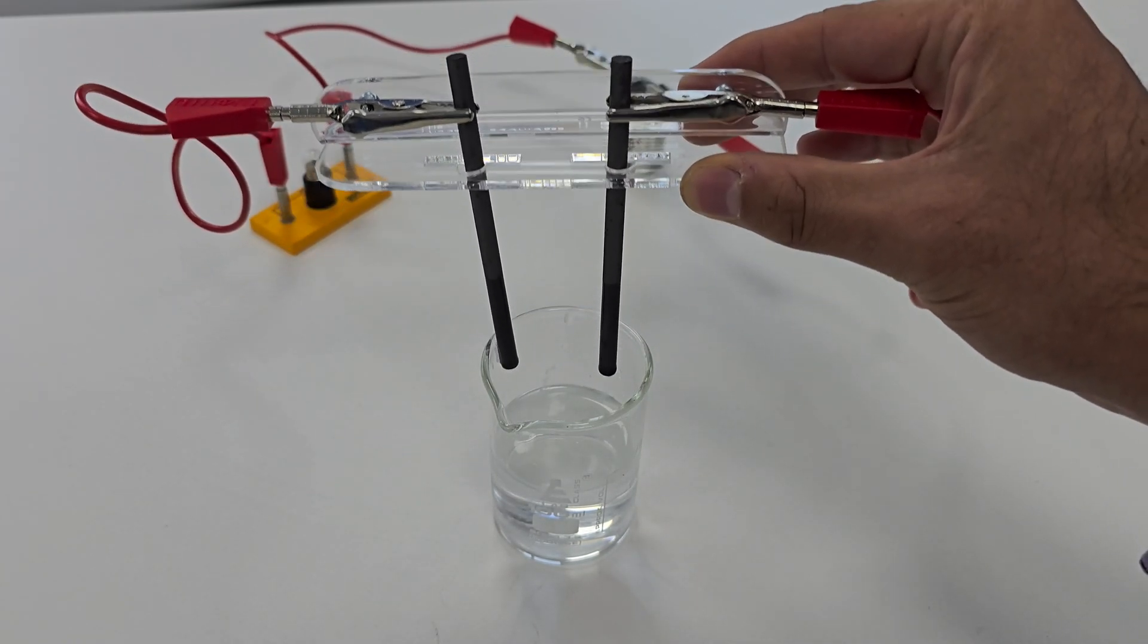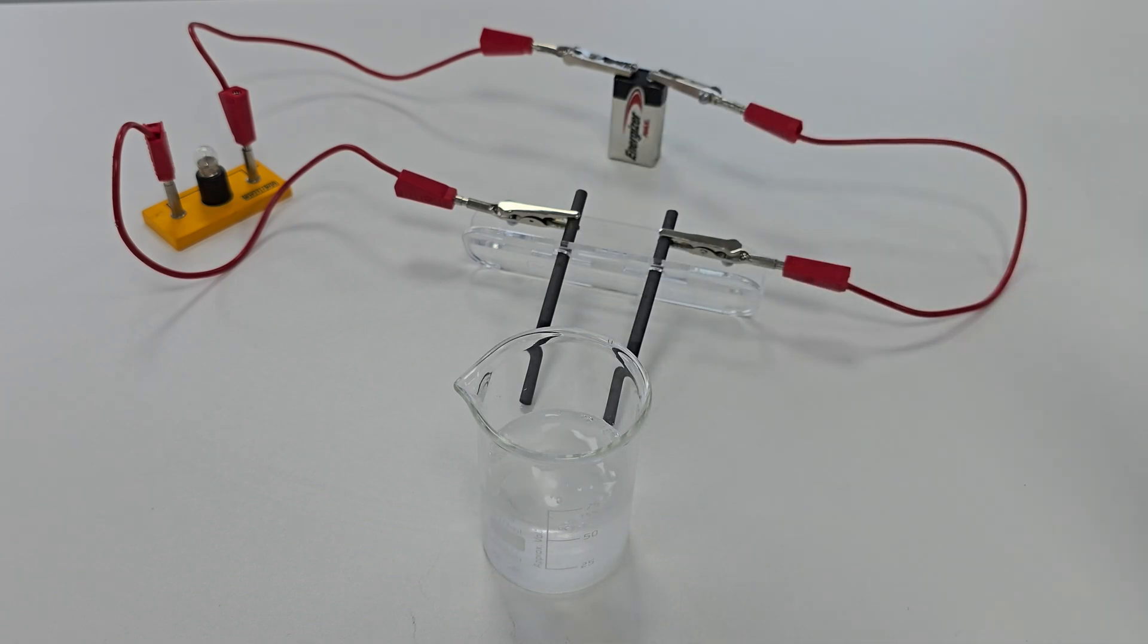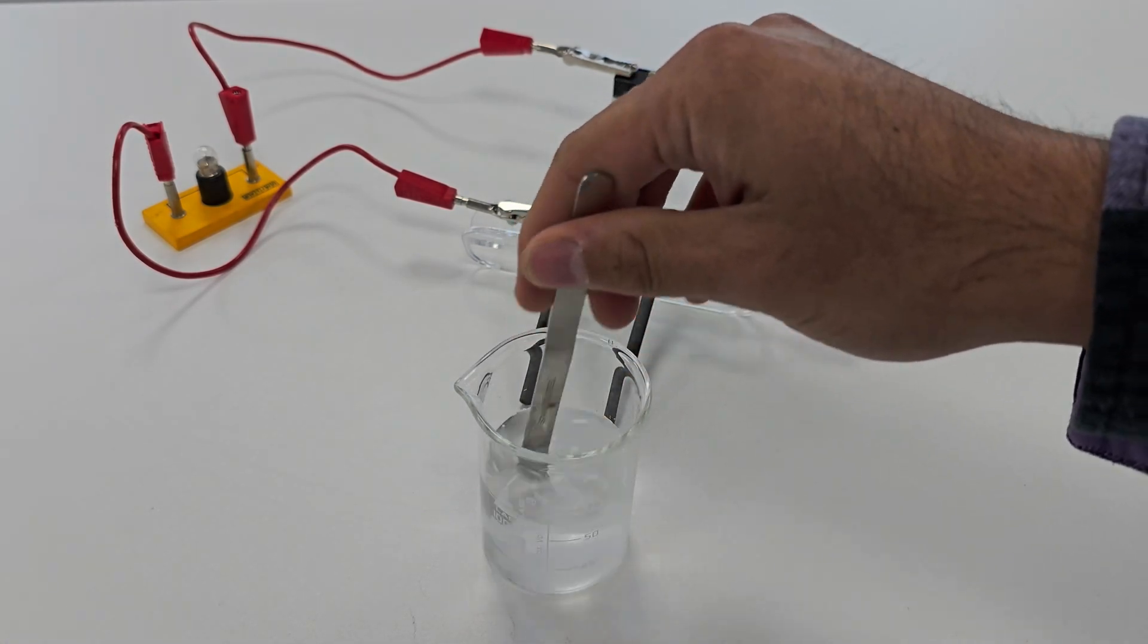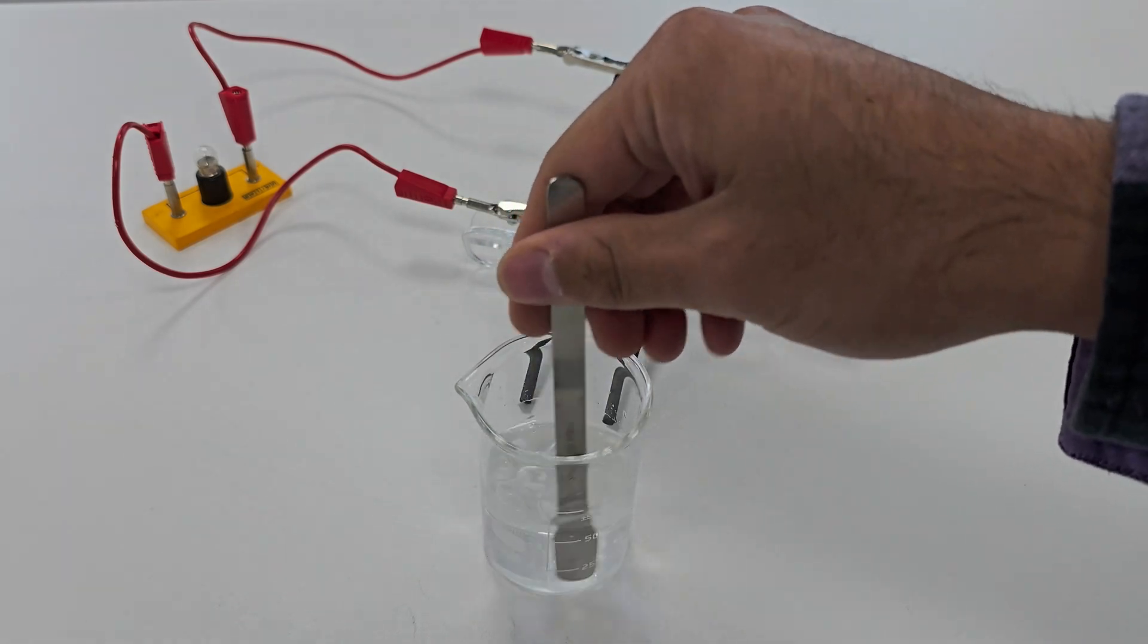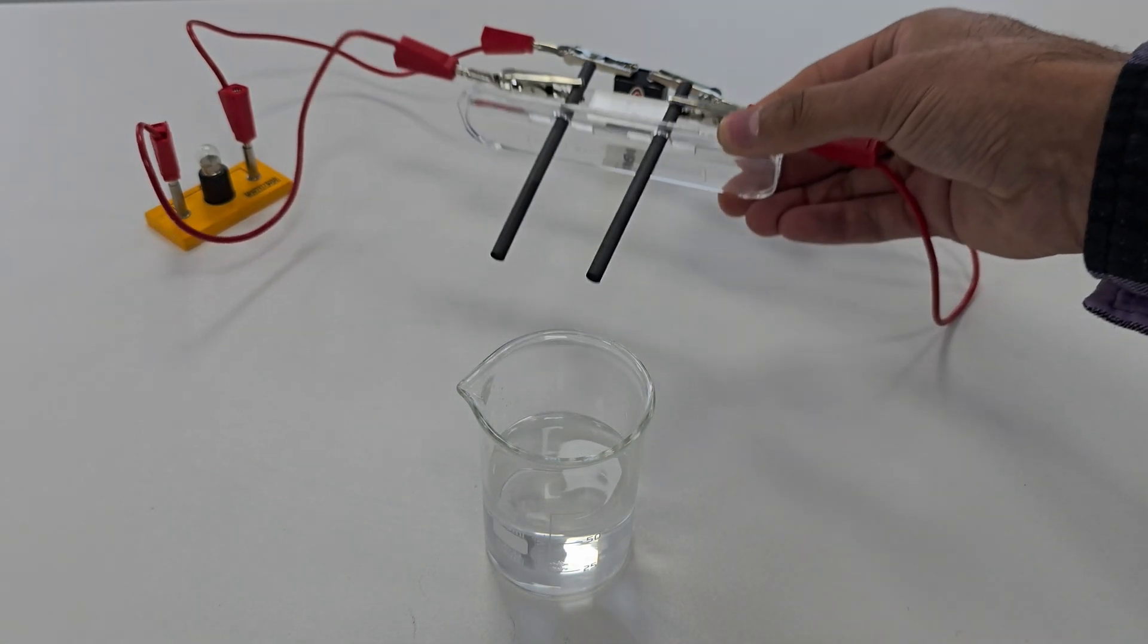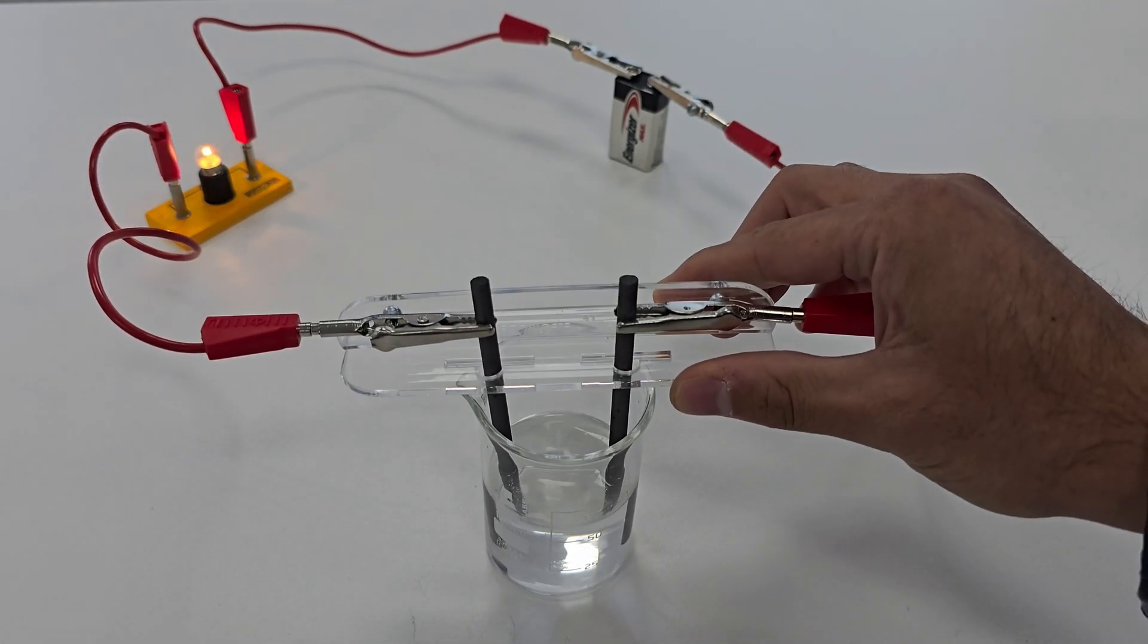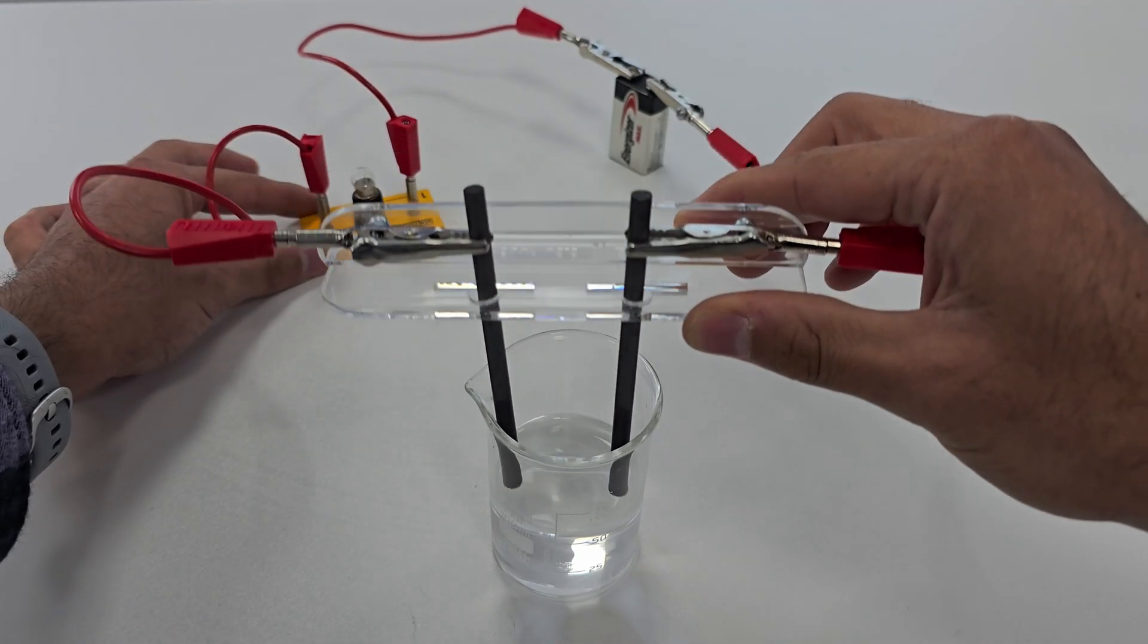Finally, let's repeat the process with potassium chloride. Once it dissolves, its ions also become free to move. Lowering the electrodes into the potassium chloride solution causes the bulb to light up. This demonstrates that aqueous solutions of ionic compounds conduct electricity due to their mobile ions.